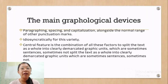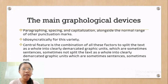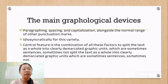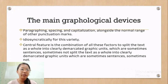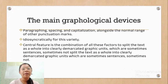The main graphological devices. One can make use of paragraphing, spacing, and capitalization, alongside a normal range of other punctuation marks, some of which tend to be used idiosyncratically for this variety. The central feature is the combination of all these factors to split the text as a whole into clearly demarcated graphic units, which are sometimes sentences, sometimes not. The initial letter of each of these units is always a capital, and they always end in a period, in all cases but one line.